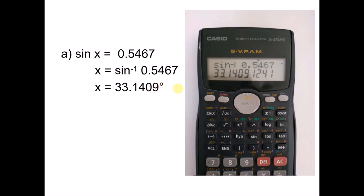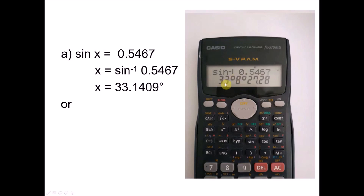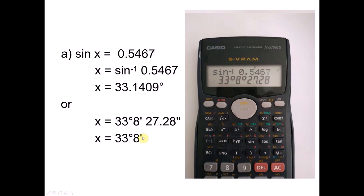If the question asks for the answer in degrees and minutes, immediately after getting the answer press the conversion button. It will show 33 degrees 8 minutes 27.28 seconds. Since one minute is 60 seconds, if the seconds value is below 30 we don't add one to the minutes. Since 27.28 is less than 30, the answer is 33 degrees 8 minutes. If the seconds were 30 or above, we would add one to the minutes.